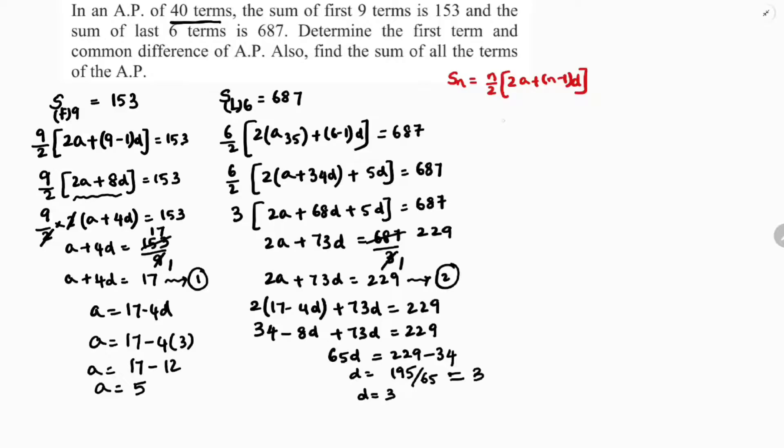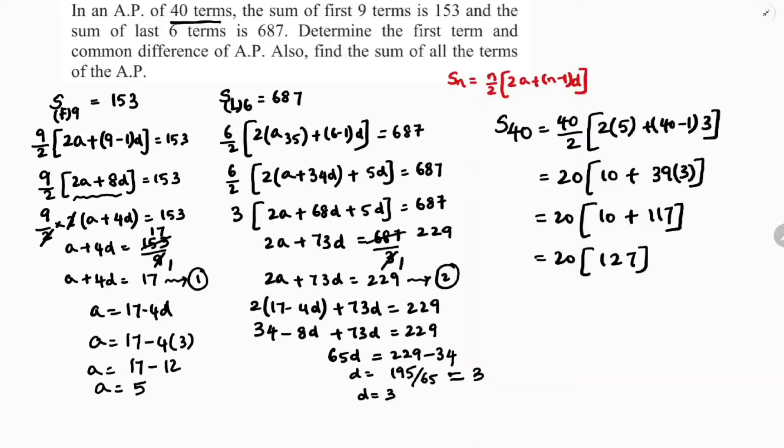Now we need to find sum of all the terms of the AP. There are 40 terms. S40: 40 by 2, into 2A, A is 5, plus 40 minus 1 into D, D is 3. 40 by 2 is 20, 2 times 5 is 10, 39 times 3. 20 into 10 plus 117. 20 times 127 is 2540. So sum of 40 terms is 2540.